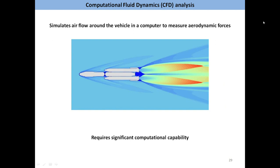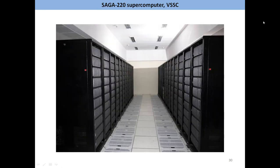Aerodynamic studies can also be carried out through mathematical computations in a computer. For this, very powerful computers are required. This manner of aerodynamic studies is termed computational fluid dynamics analysis. The photo that you see here is that of the Saga 220 supercomputer in VSSC. This supercomputer is mainly used for carrying out CFD analysis of rockets.